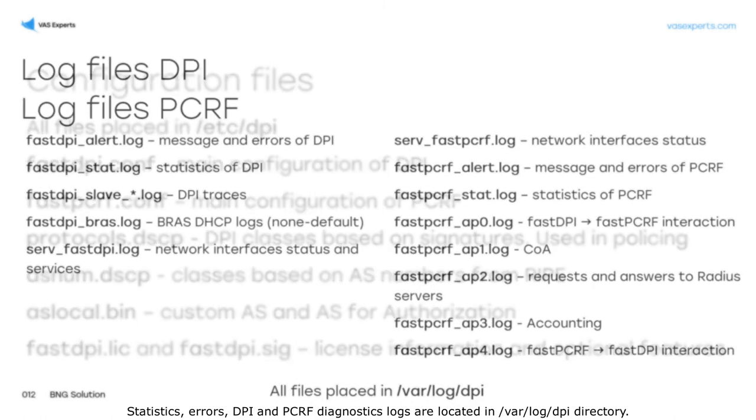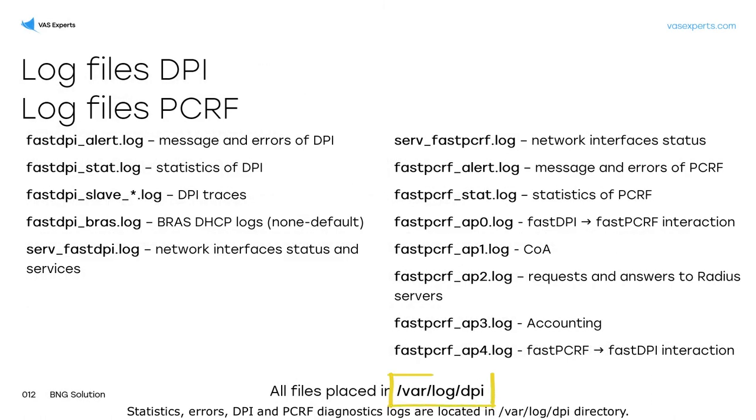Statistics, errors, and DPI and PCRF diagnostics logs are located in the /var/log/dpi directory.